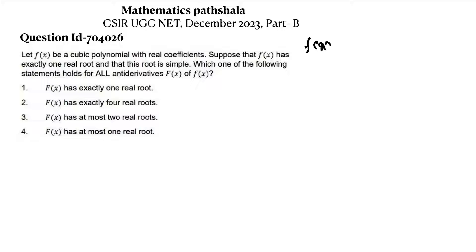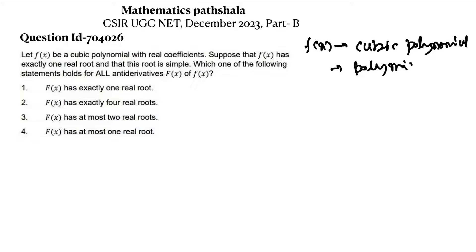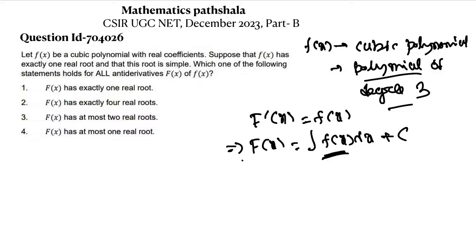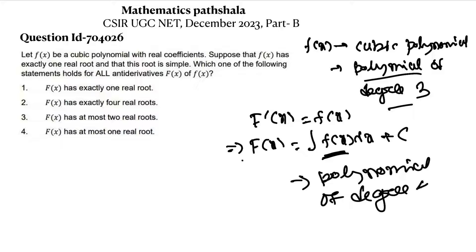f(x) is a cubic polynomial, that means a polynomial of degree three. F(x) is the antiderivative of f(x), which means F'(x) = f(x). From here, F(x) = ∫f(x)dx + C, where C is the integrating constant. Since f(x) is a polynomial of degree three, F(x) should be a polynomial of degree four, because we are integrating f(x).